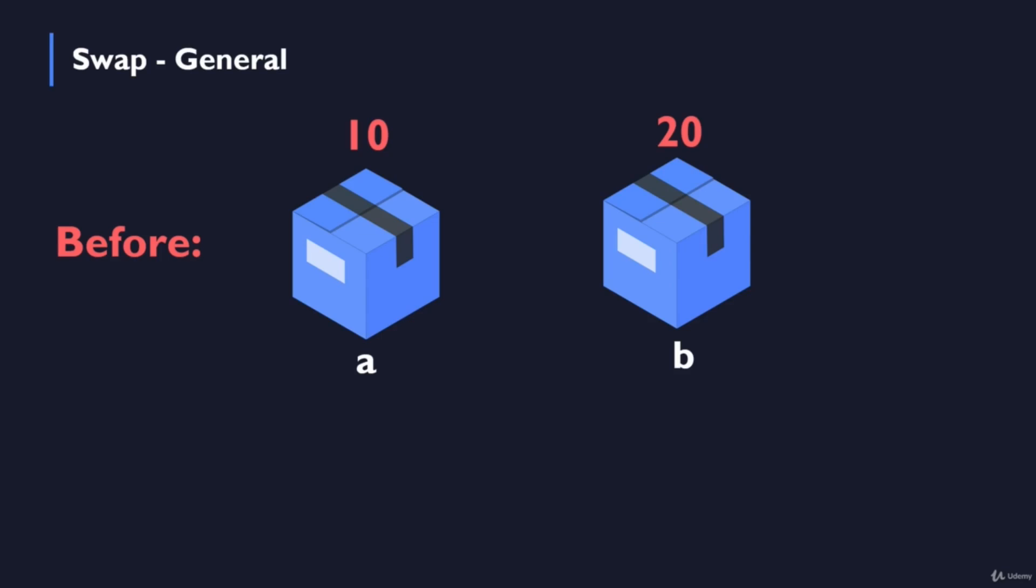So for example, at the beginning we have some box a with a value of 10 and a box b with a value of 20. What we need to do is just to exchange the values within these boxes. So if at first we had a value of 10 in box a and a value of 20 in box b, then after the exchange there will be a value of 20 in box a and a value of 10 in box b, just as we can see it in this demonstration.